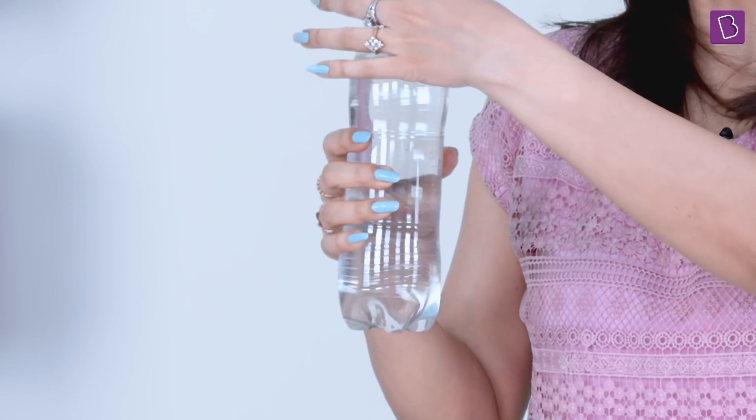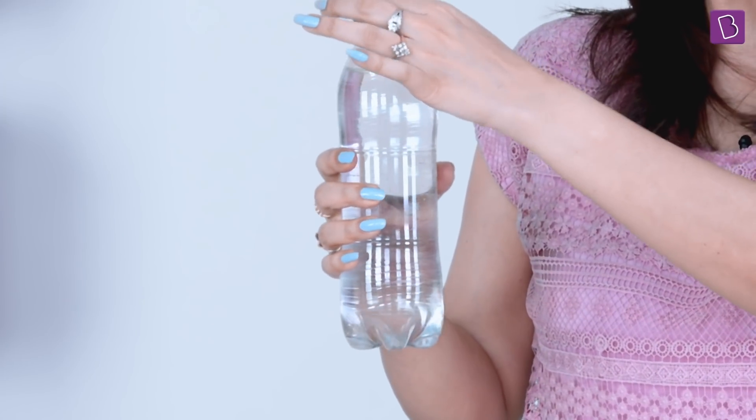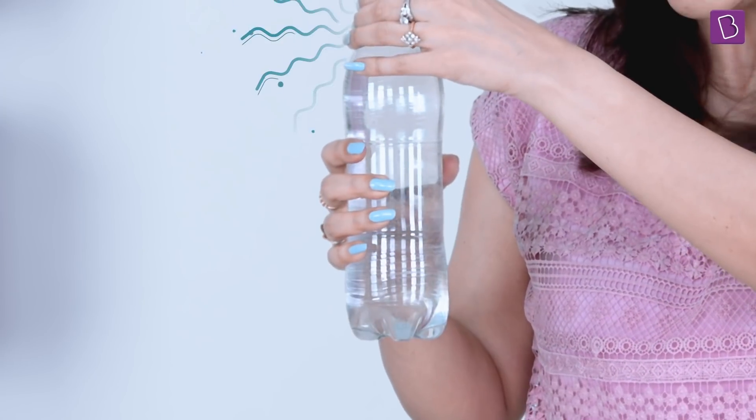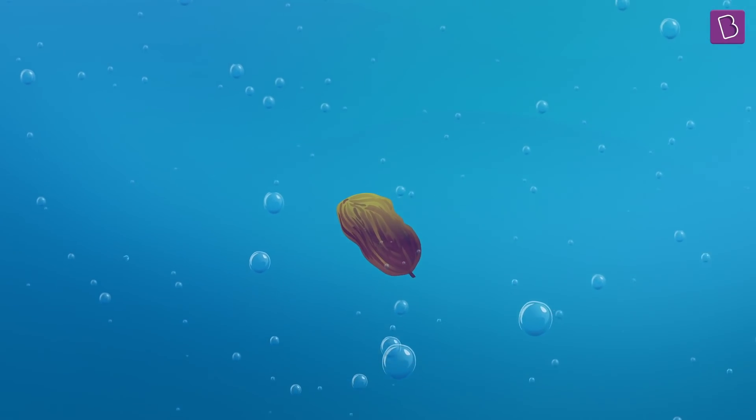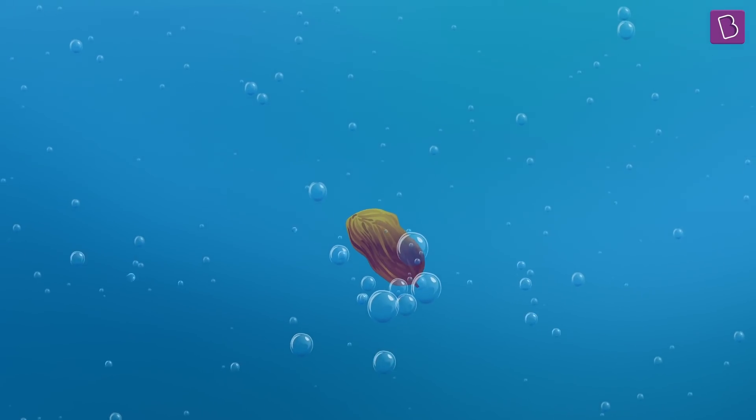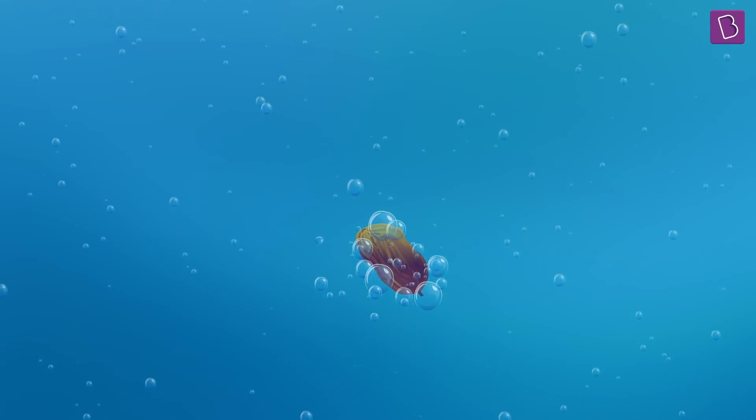Right? So what is there in the carbonated water that is increasing the size of the raisin but not increasing its weight? Let's think. It must be something that occupies space but has very little weight. Gas. Yes, the carbon dioxide present in the carbonated drink. The gas bubbles in a carbonated drink are attracted to the rough surface of the raisins.